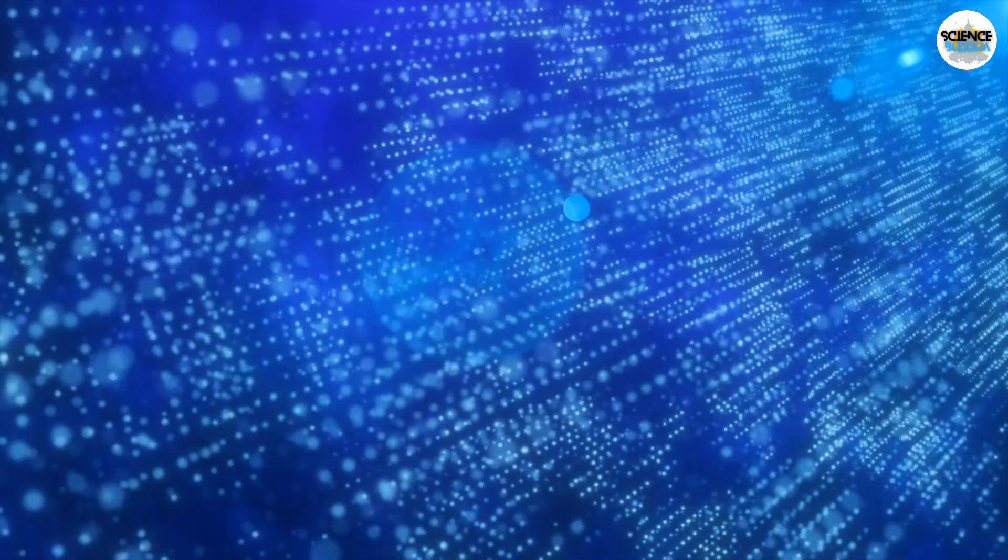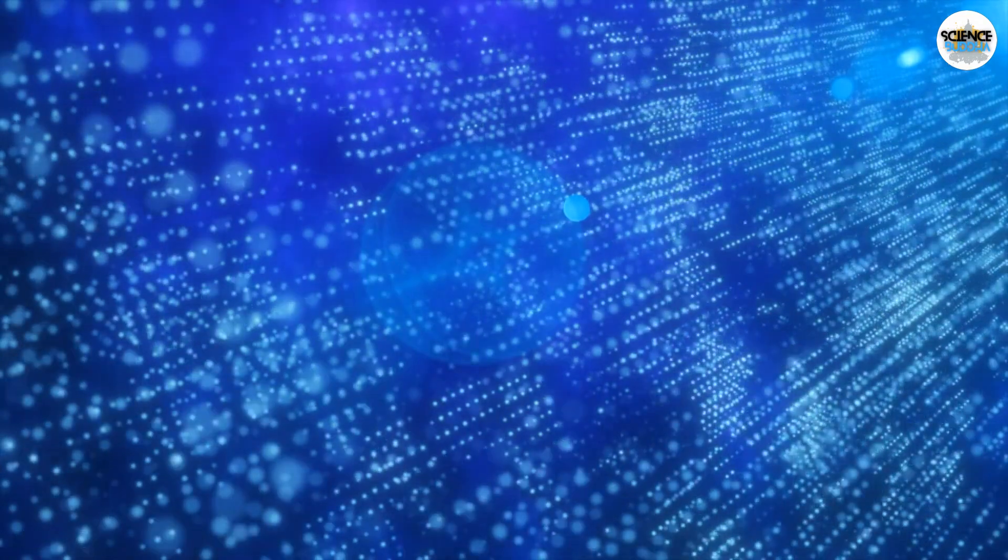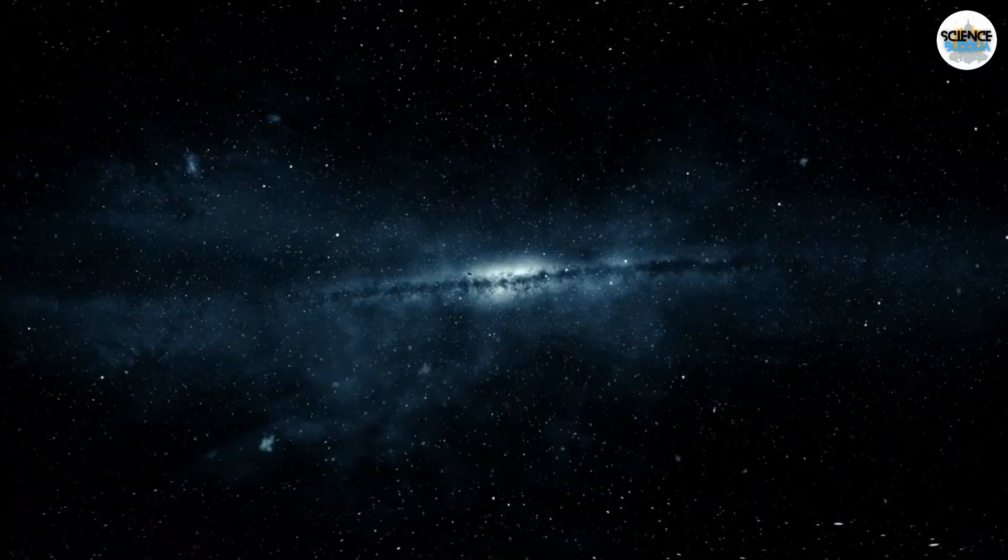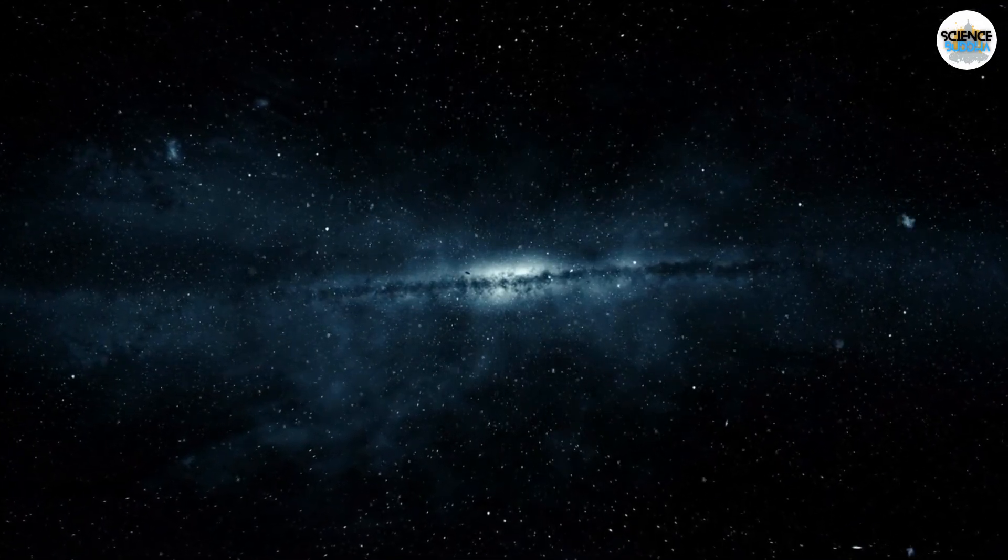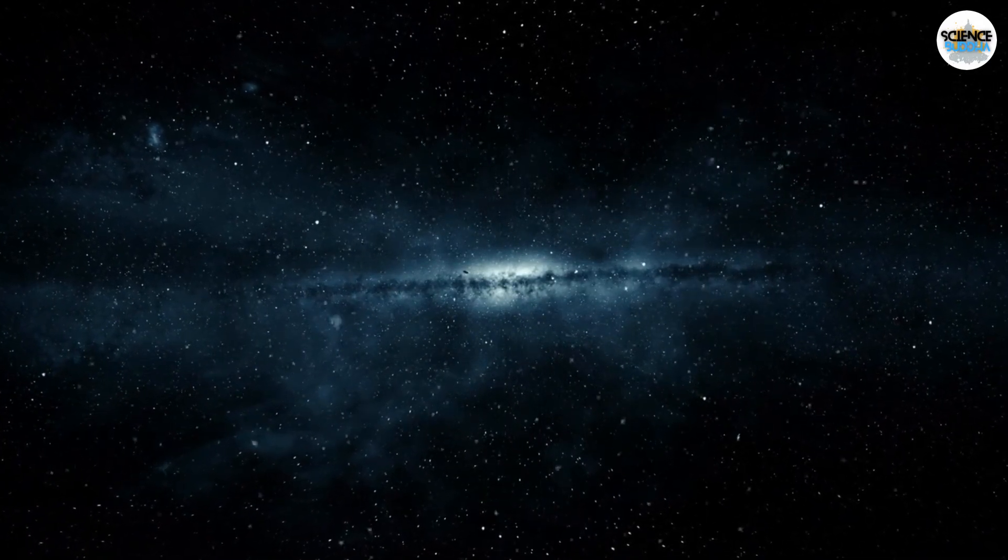A mesmerizing planetary system named PDS-70, located a staggering 370 light-years away from our little blue dot. This celestial marvel is home to a star that boasts both an inner and outer disk of swirling gas and dust, separated by a jaw-dropping 5 billion-mile-wide gap.